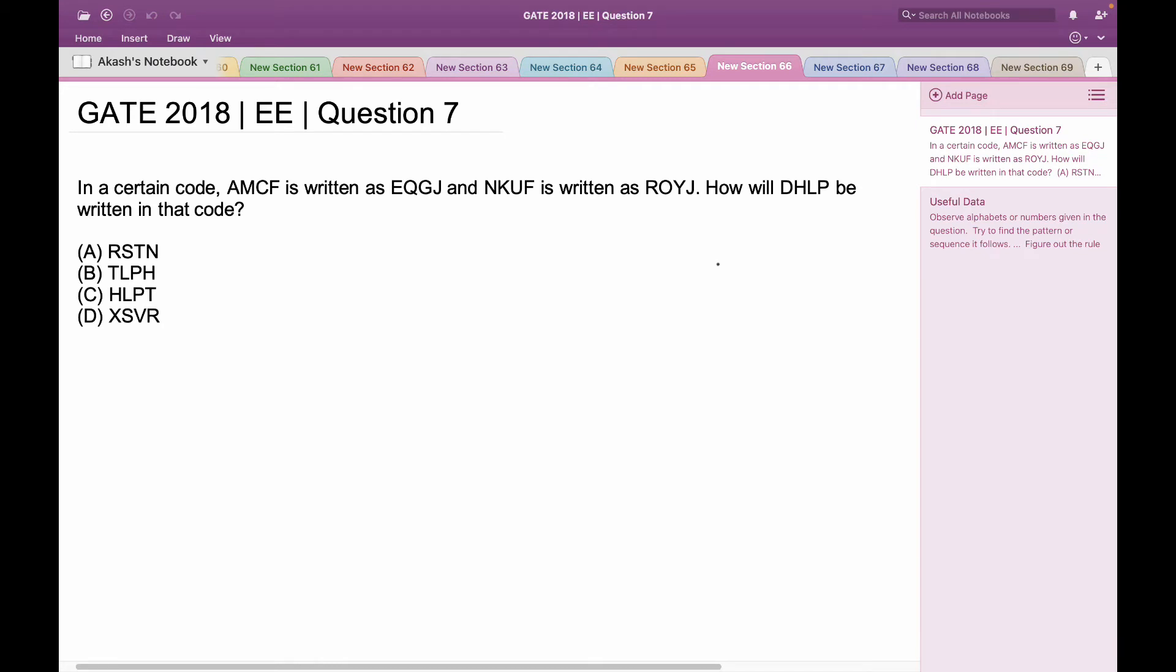Hello everyone, this is a question asked in GATE 2018 Electrical Engineering. In a certain code AMCF is written as EQGJ and NKUF is written as ROYJ. How will DHLP be written in that code?